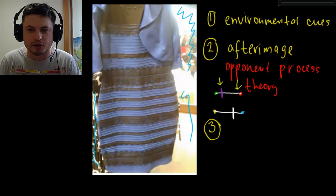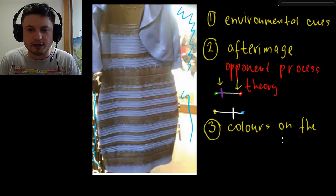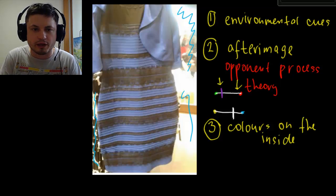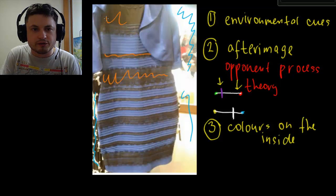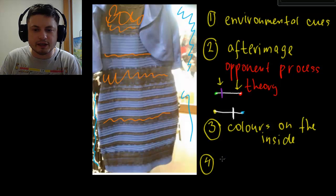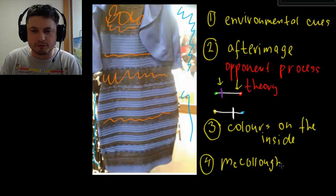The third phenomenon is simply the fact that this is a really bad picture. There is actually quite a lot of yellows and reds being projected to us, especially from the dark areas — this is really why we even saw those colors. And lastly, number four was the McCullough Effect, which refers to the idea of having stripes in the dress.